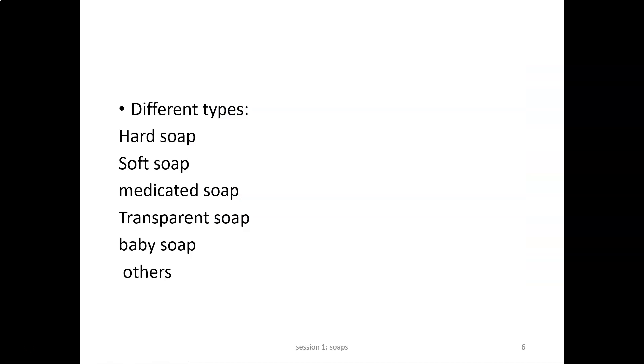Soaps are classified into different categories: hard soap, soft soap, medicated soap, transparent soap, baby soap, etc. Hard soaps are also known as washing soaps. They are produced using cheap oil and caustic soda, contain more free alkali, and hence are not very good for use on skin. They usually contain silicate or white clay as filler and a cheap perfume. We generally would not prefer to use hard soap on our skin.